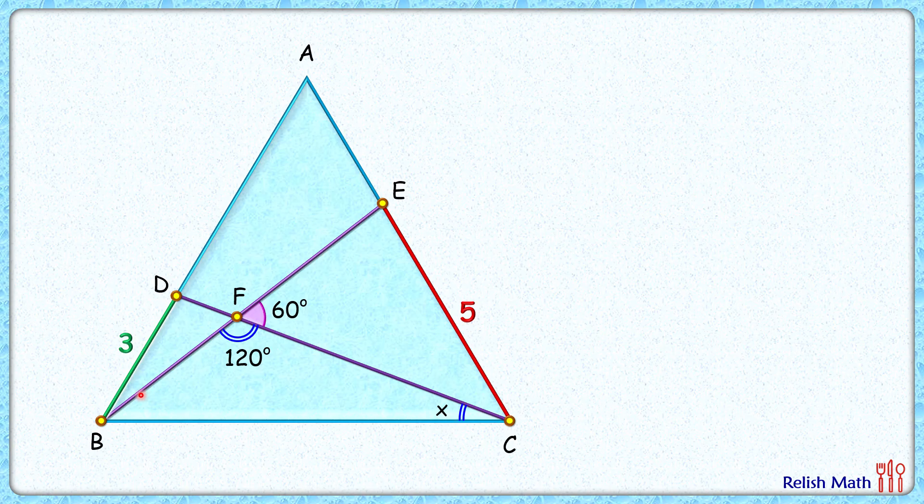By angle sum property, this angle will be 60 minus x. Now it's an equilateral triangle, so all the angles are 60 degrees. Angle B, the full angle, is 60 degrees. Part of it is 60 minus x.